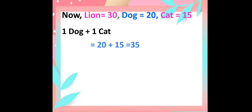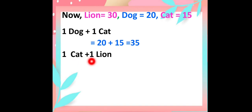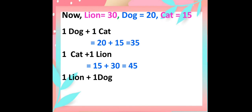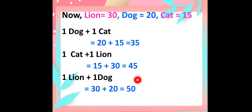After adding dog and cat I get 35. Next, 1 cat plus 1 lion: 1 cat is equal to 15 and 1 lion is equal to 30, so 30 plus 15 is equal to 45. Next, 1 lion plus 1 dog: 1 lion is 30 and 1 dog is 20, so 30 plus 20 is equal to 50. Students, I hope that you understood this puzzle.